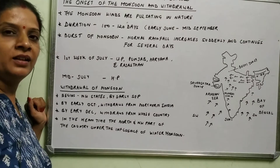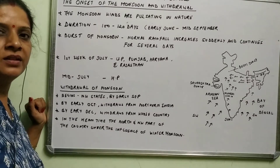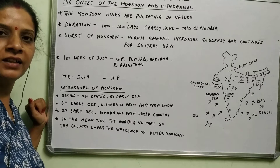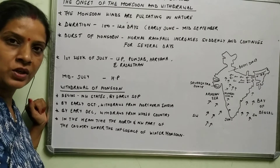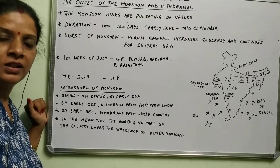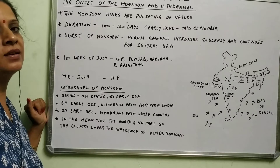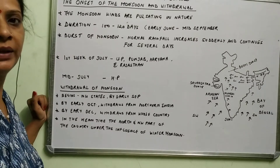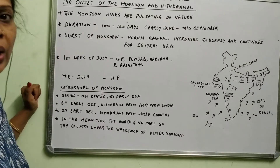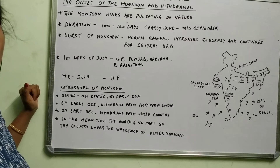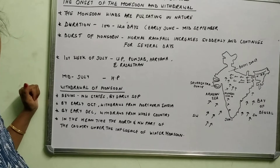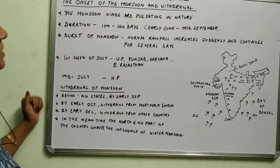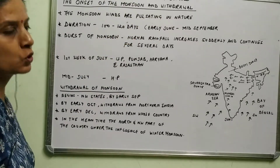Hello children. In the climate chapter, till now we have done factors affecting the climate regarding the southwest monsoon, western cyclonic disturbances, mechanism of the monsoon, and the effect of El Niño on the southern oscillation on the monsoon in India. Now let's begin with the next topic, that is the onset of the monsoon and the withdrawal.